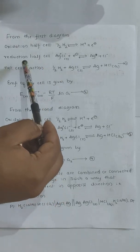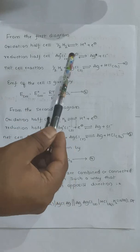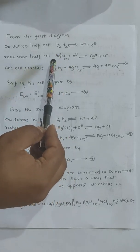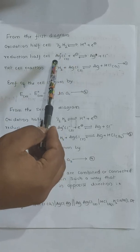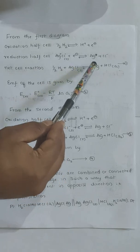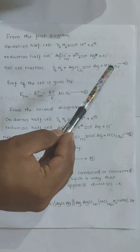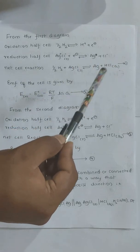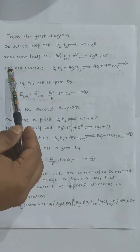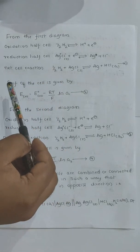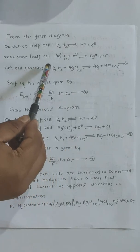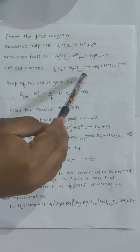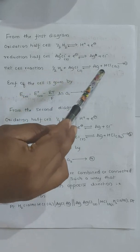In the reduction half cell, AgCl gains electrons. The Ag+ ions present in the AgCl gain electrons and deposit as Ag. Silver can also be dissolved in the solution and dissociate in the electrolyte. The net cell reaction is: half H2 plus AgCl solid is in equilibrium with Ag and HCl. The electron terms cancel out.